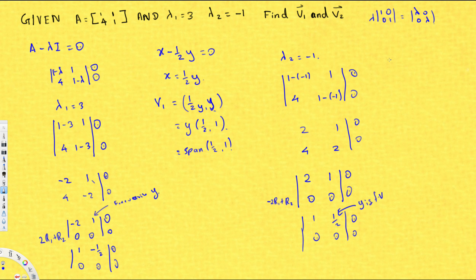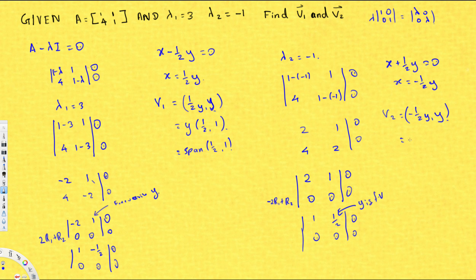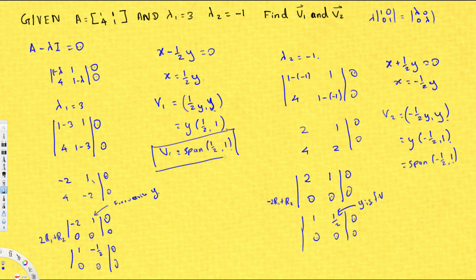Writing the equation: x + (1/2)y = 0, so x = -(1/2)y. Therefore, v2 = [-(1/2)y, y] = y·[-1/2, 1], and v2 = span{[-1/2, 1]}. So the final answers are v1 = span{[1/2, 1]} for λ1=3, and v2 = span{[-1/2, 1]} for λ2=-1. That's how it's done — hope you liked this video, see you next time.